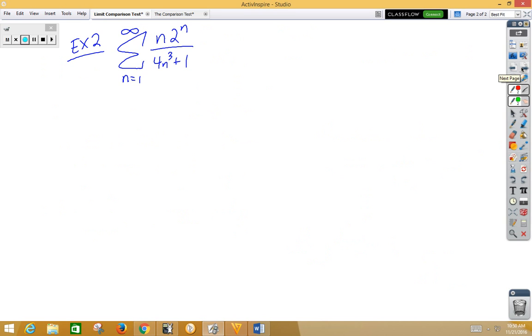So this series is n times 2 to the n over 4n cubed plus 1. Well, so let's think about how we can compare this one. We're going to try comparing this one to 2 to the n over n squared. Now, if you think about that, if we reduce the n with the n cubed, we get an n squared on the bottom. We can ignore the plus 1 and the coefficient, the 4, we could bump outside if we really wanted to. So that's why we can compare it to this problem.